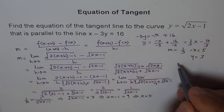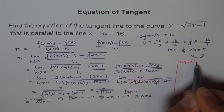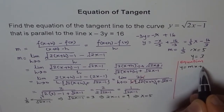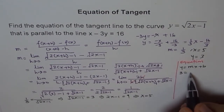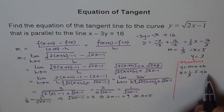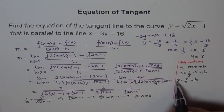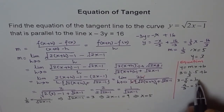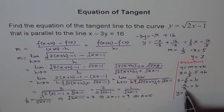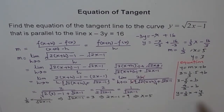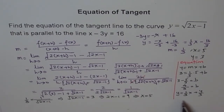Now let's write the equation of the tangent. Using y equals mx plus b: y is 3, slope m is 1 over 3, and x is 5. So 3 equals (1 over 3) times 5 plus b, giving b equals 3 minus 5 over 3, which is 9 over 3 minus 5 over 3, equals 4 over 3. Therefore the equation of the tangent is y equals (1 over 3)x plus 4 over 3. You can also write this in standard form by multiplying by 3.